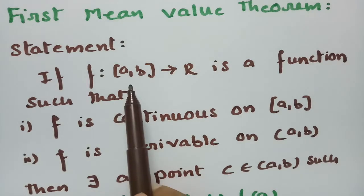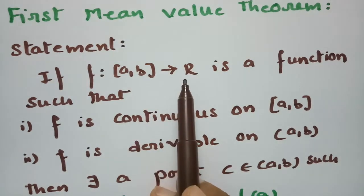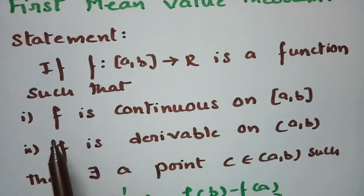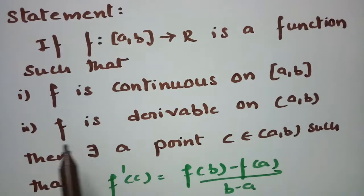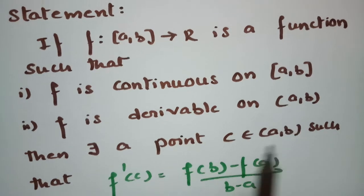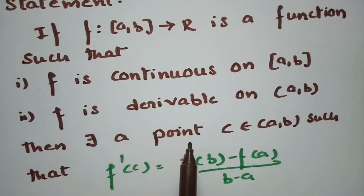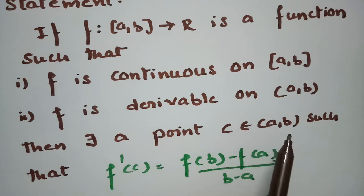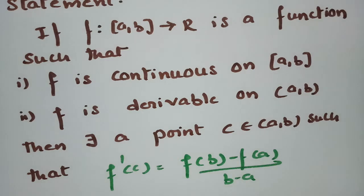Here, it is given that f is a function from closed [a, b] to ℝ, such that f is continuous on closed [a, b] and f is derivable on open (a, b). We have to show that there exists a point c belonging to open (a, b) such that f'(c) equals [f(b) − f(a)] / (b − a).